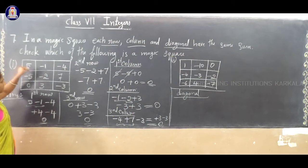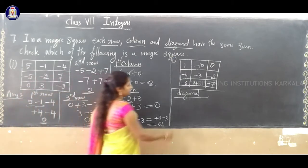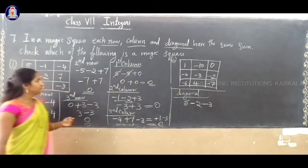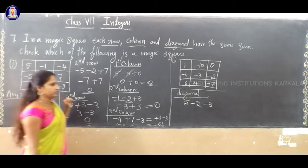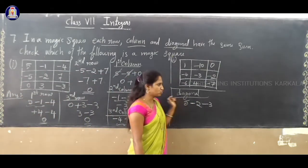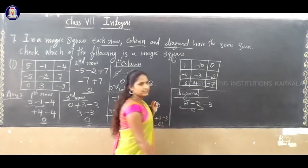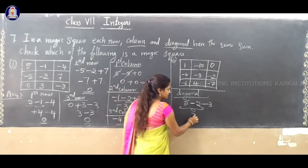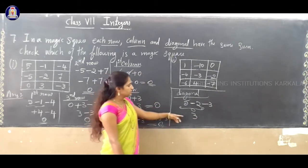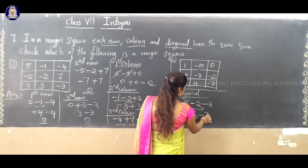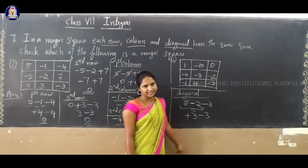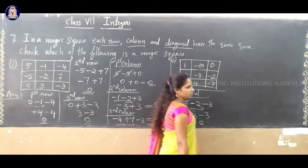First diagonal: plus 5, minus 2, minus 3. Plus 5 minus 2 — different signs, subtraction — 5 minus 2 is 3. Then plus 3 minus 3 — different signs — 3 minus 3 is 0. So, the first diagonal sum is 0.